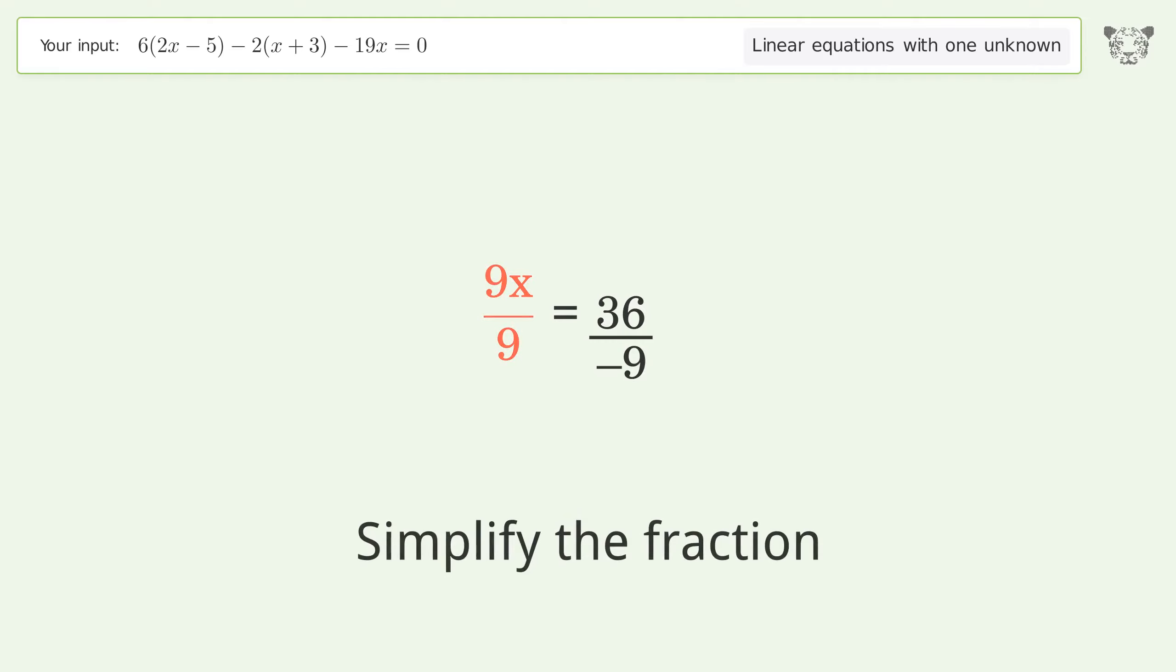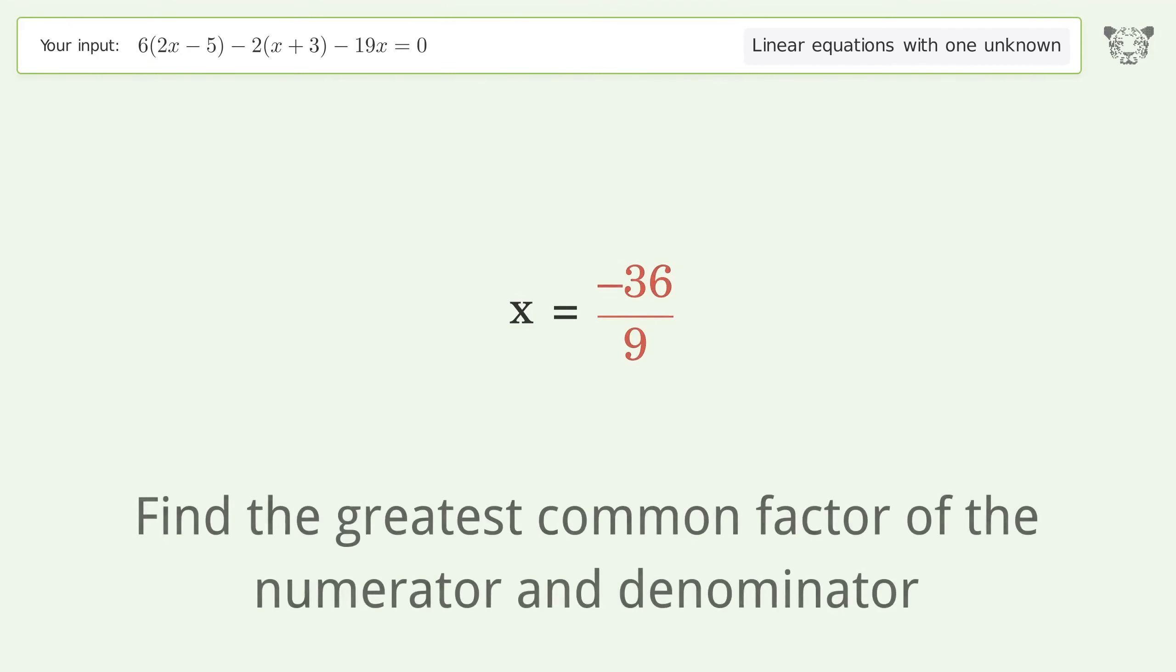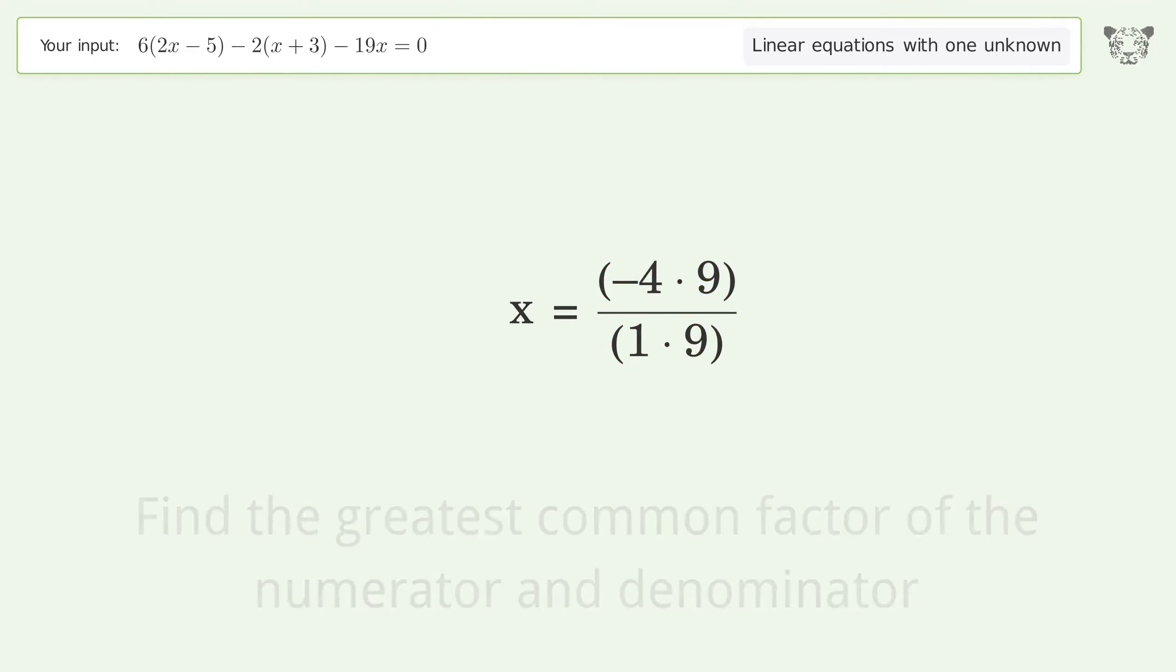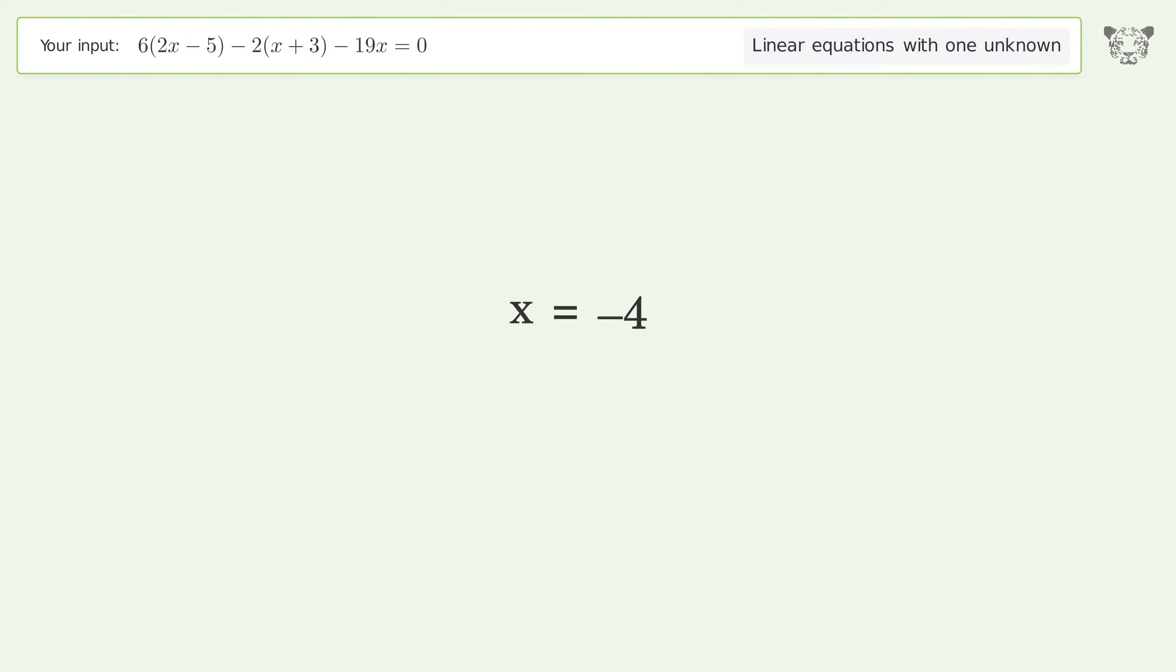Cancel out the negatives, simplify the fraction, move the negative sign from the denominator to the numerator, find the greatest common factor of the numerator and denominator, factor out and cancel the greatest common factor. And so the final result is x equals negative 4.